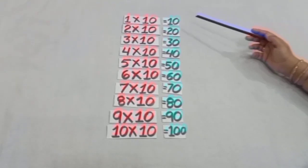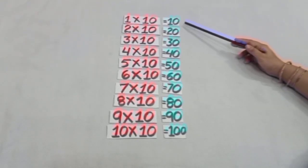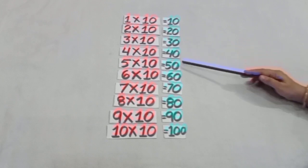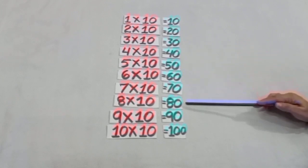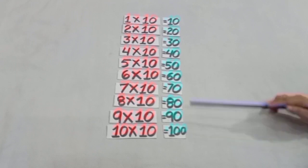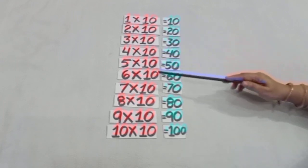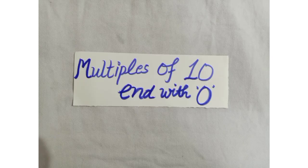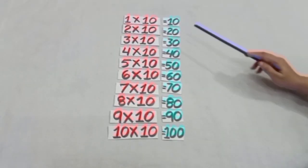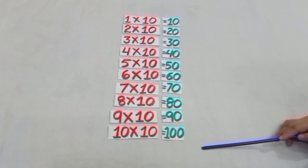So dear students, you can see 10, 20, 30, 40, 50, 60, 70, 80, 90, 100 — these are all multiples of 10. And we have come to know the fact that multiples of 10 end with 0. You can see this here — these are all multiples of 10.